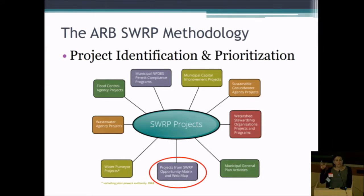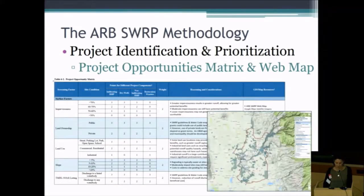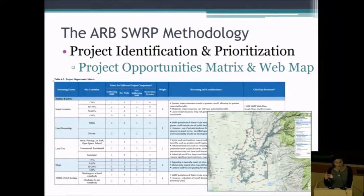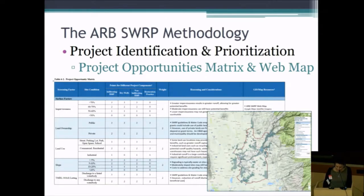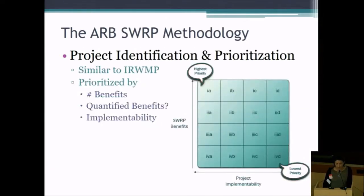We also put together a couple of new tools. One is the ARB web map that Eric showcased, available on the OWP website. Another is a project opportunity matrix that lists site features and conditions indicating how good a project could be — whether this would be an ideal LID project, an ideal restoration site, or an ideal site for a dry well. The prioritization scheme mimics the ERGs: number of benefits, whether benefits are quantified, and how implementable the project is, resulting in a tiered system.